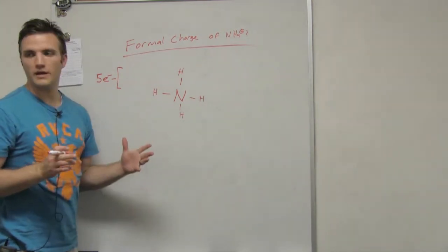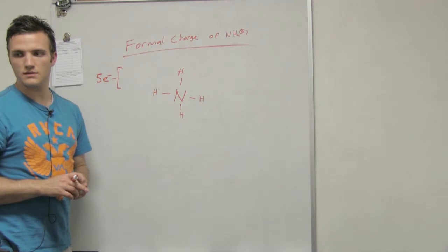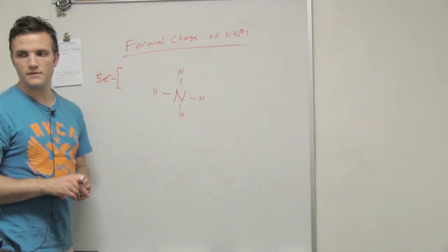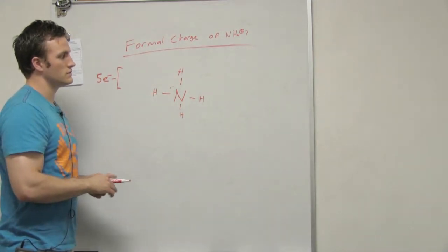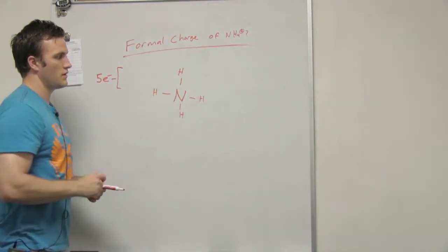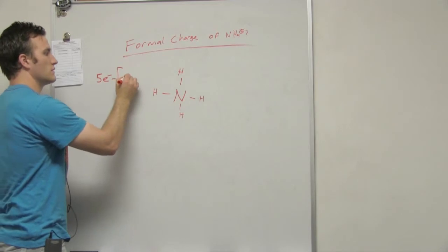Okay, so are there any lone pair electrons, or non-bonding electrons? Non-bonding electrons mean like any lone pair, which is zero. Right, okay. So it would be zero plus four,